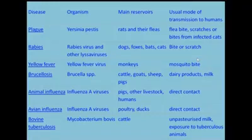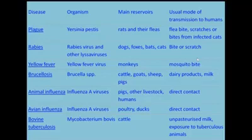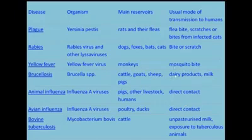Different diseases come from animals: plague comes from rats and fleas; cat scratch fever from scratches or bites from infected cats; rabies and yellow fever; and bovine tuberculosis, which comes basically from cattle — through drinking unpasteurized milk or exposure to infected animals. Mosquitoes are also a major source of many diseases through direct and indirect contact.